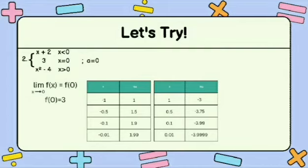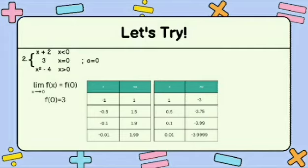To find the value of f of X for the limit of X plus 2 as X approaches 0, we will use a table of values. Since X is less than 0, our X values are negative 1, negative 0.5, negative 0.1, and negative 0.01. Substituting all values of X into the equation, f of X equals 1, 1.5, 1.9, and 1.99. Therefore, the limit of X plus 2 as X approaches 0 from the left is equal to 2.